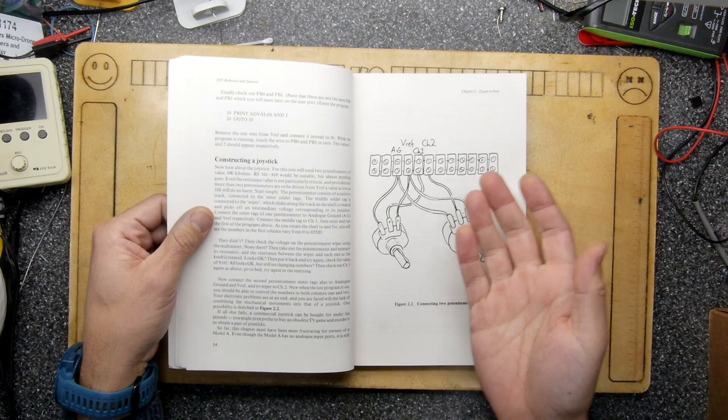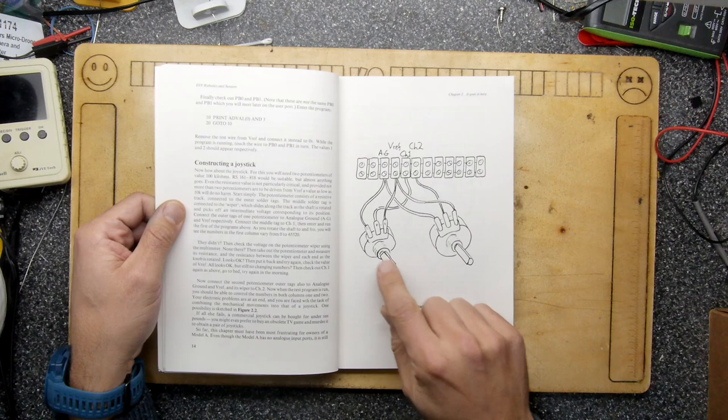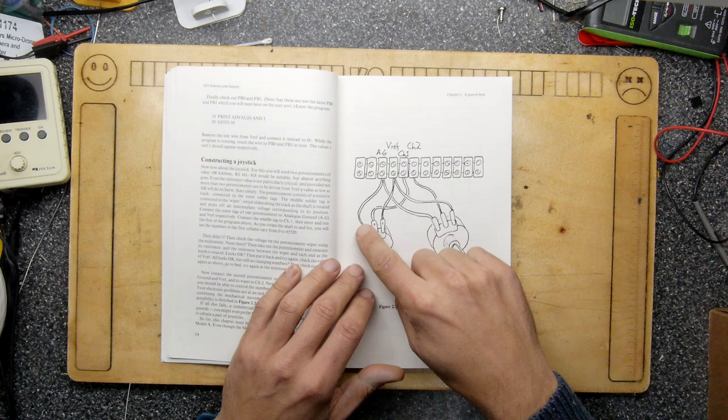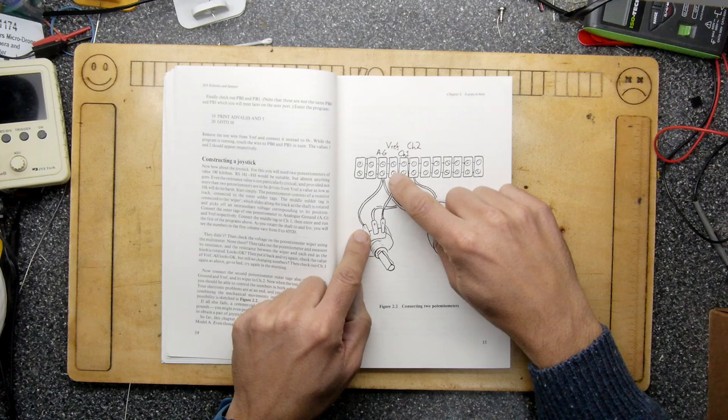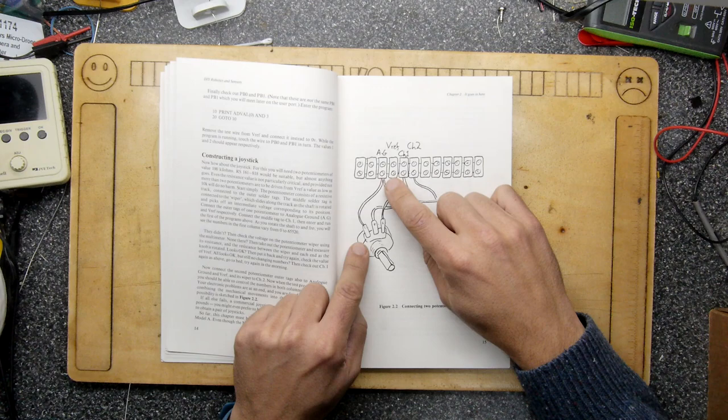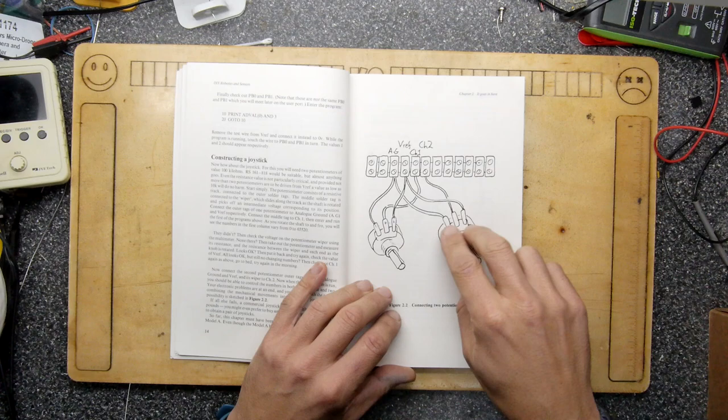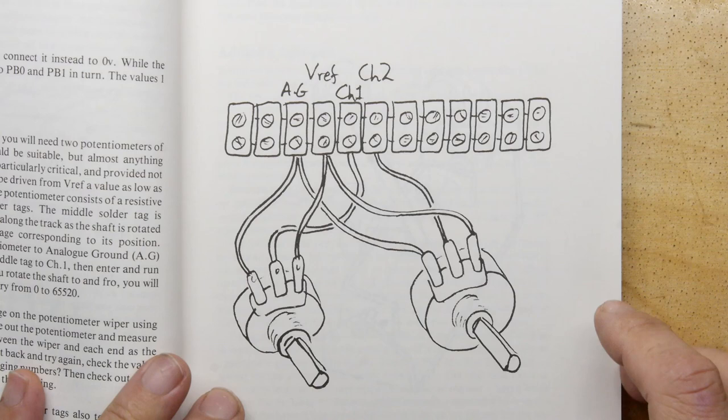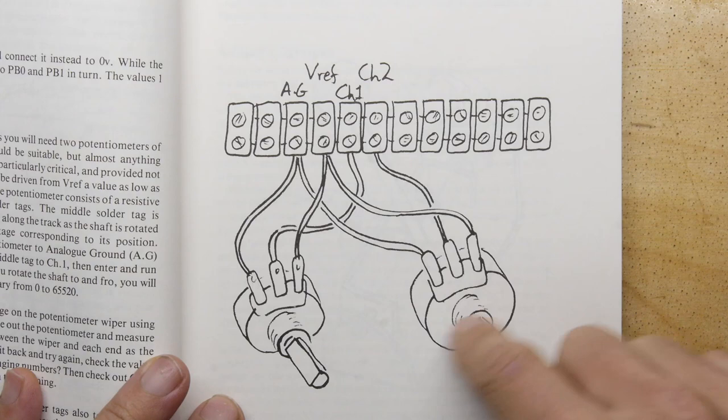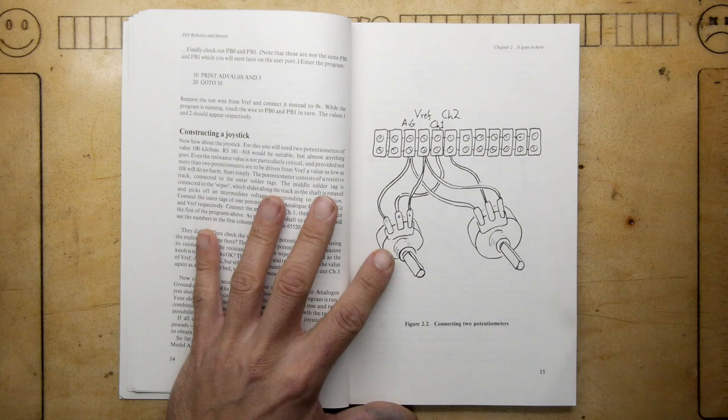Look, constructing a joystick. You're going to bung two potentiometers of a hundred kilohms each. They're going to the analog ground and then that's your voltage reference. I wonder if that is adjustable, I'm surprised it's not just bunged to five volts. You twiddle your pot and then your input is going into channel one, and then your second pot is wired up the same way and then it goes to channel two.